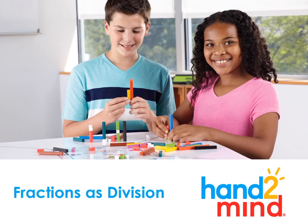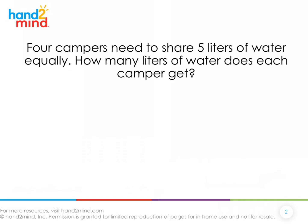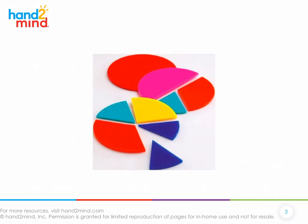Today we're looking at fractions as division. Our first problem says that four campers need to share five liters of water equally. How many liters of water does each camper get? To help us solve this, we are going to use our fraction circles.